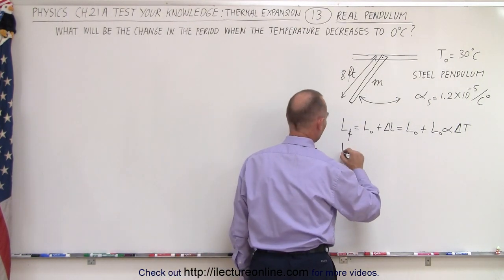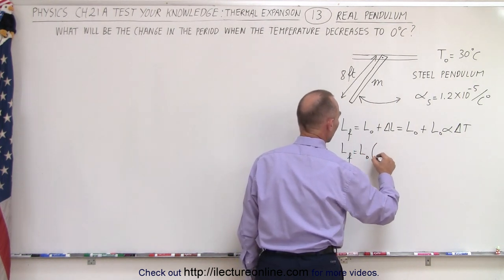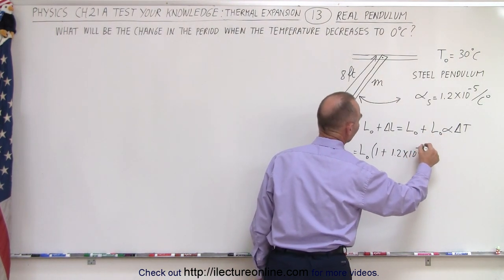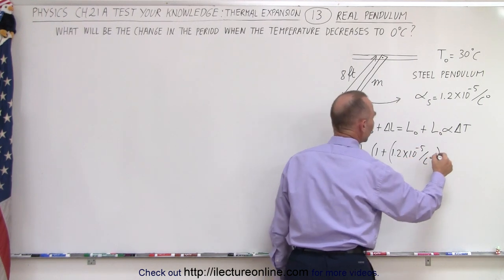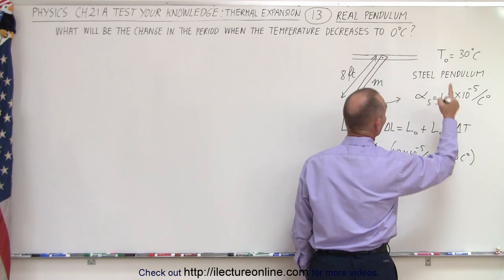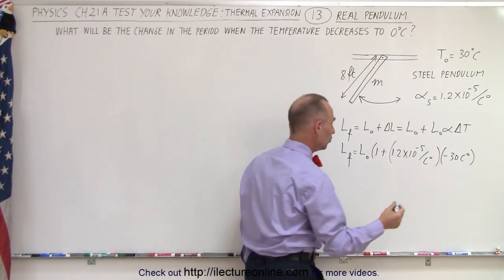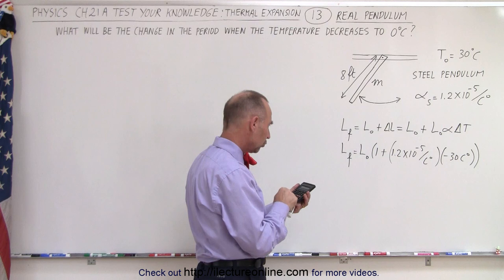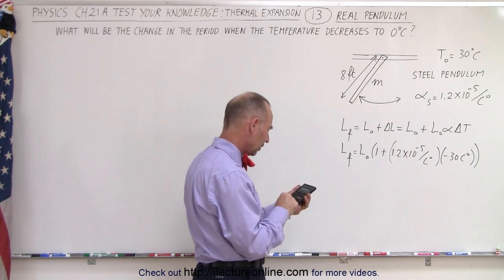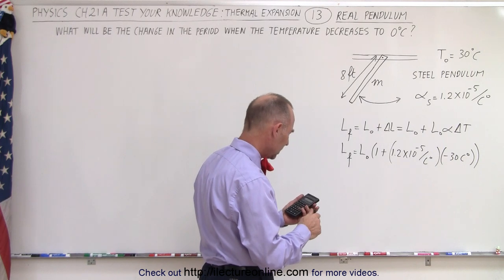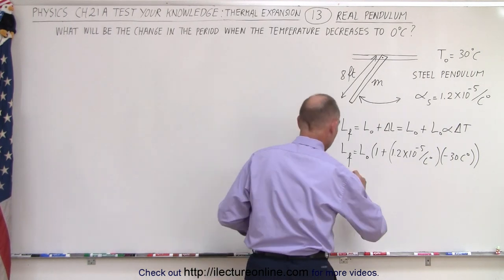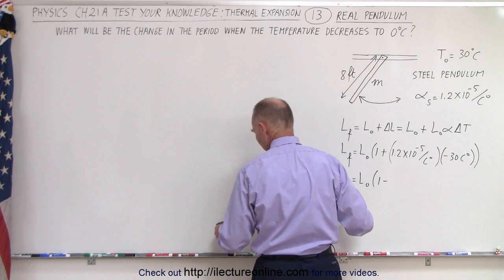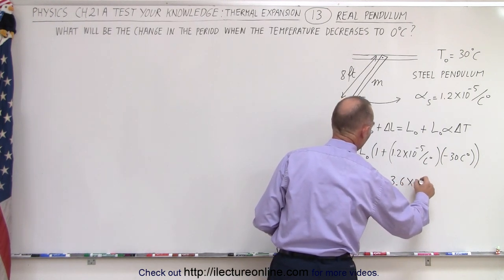Factoring out L-sub-naught, the final length will be equal to the original length times 1 plus the coefficient, which is 1.2 times 10 to the minus 5 per centigrade degree, multiplied by a change of minus 30 centigrade degrees — because it goes from 30 down to 0, so it's a negative change. So L-final equals L-initial times 1 minus 3.6 times 10 to the minus 4.